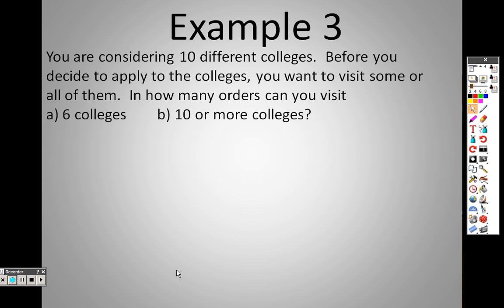Example three: you are considering ten different colleges. Before you decide to apply, you want to visit some or all of them. In how many orders can you visit six colleges? With permutations, you always start with the total. I have ten different colleges and I'm going to six of them, so it's 10P6.